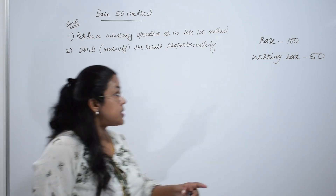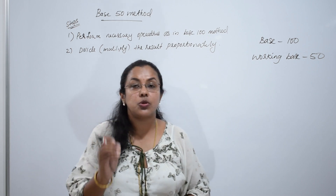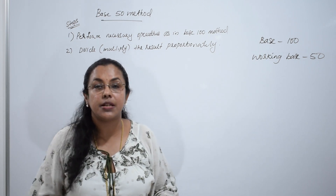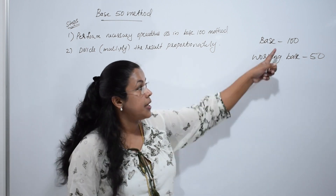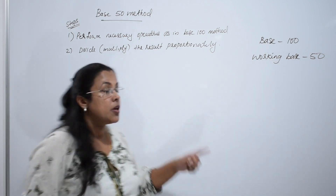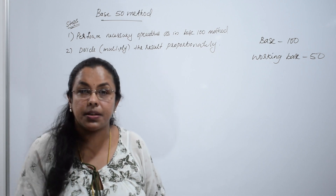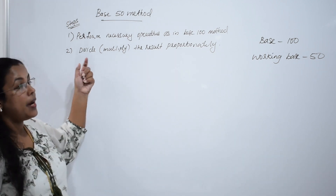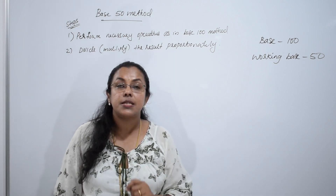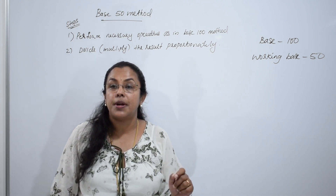What are the two steps? First step: perform necessary operations as in the base 100 method. We have learnt the base 100 method, so I am taking the theoretical base as 100. Second step: divide or multiply the result proportionately. This is named as anurupayena in Vedic Maths — it means do the operation proportionately.